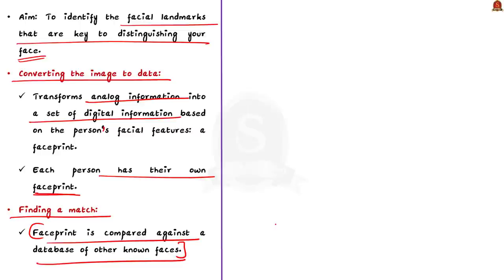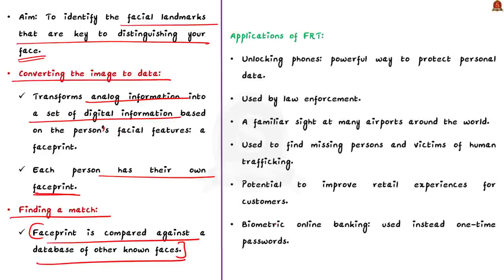Of all biometric measurements, facial recognition is considered the most natural, as we typically recognise ourselves and others by looking at faces rather than thumbprints or irises. Applications of this technology include unlocking phones, protecting personal data if a phone is stolen, and law enforcement — police collect mug shots and compare them against local, state, and federal face recognition databases. Facial recognition has also become common at many airports, reducing waiting times and improving security. It can also be used to find missing persons and victims of human trafficking.